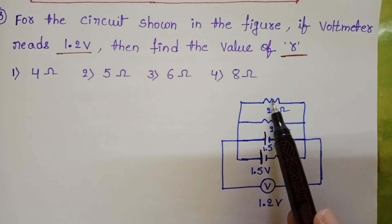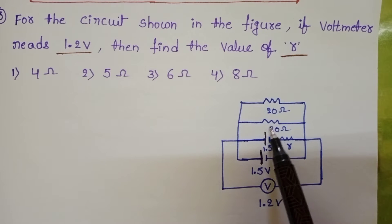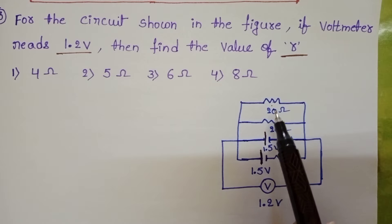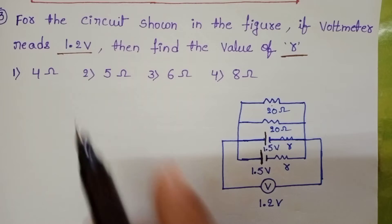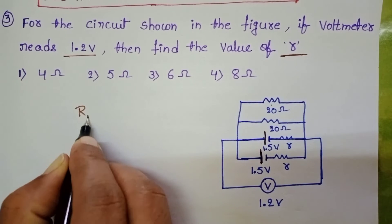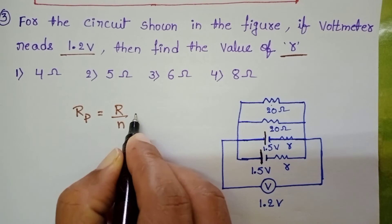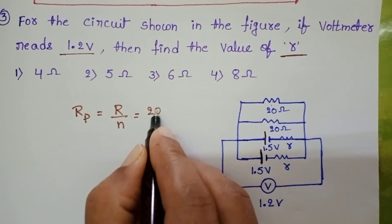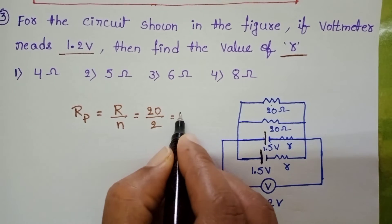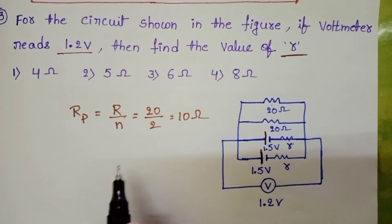Now observe the resistors. These two resistors are connected in parallel. The resistance of each resistor is same only. So equivalent resistance R by N. So two resistors each of resistance are 20 ohm. 20 by 2 is equals to 10 ohm.